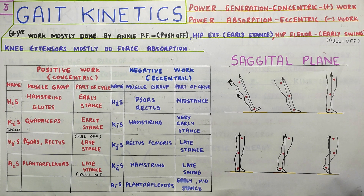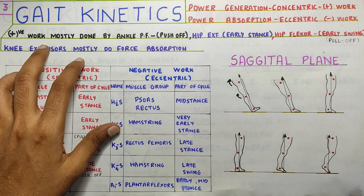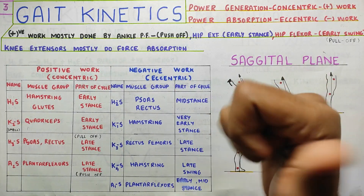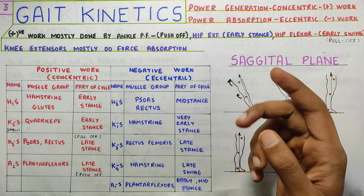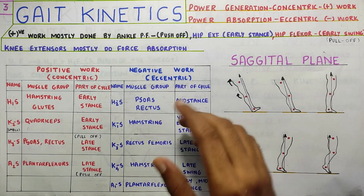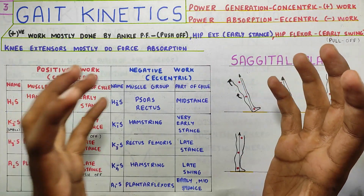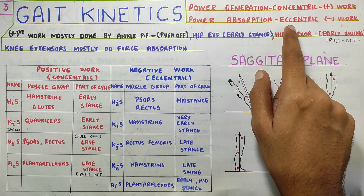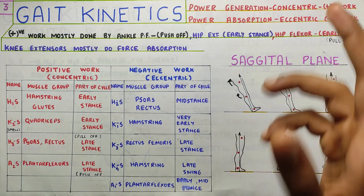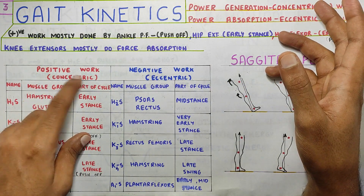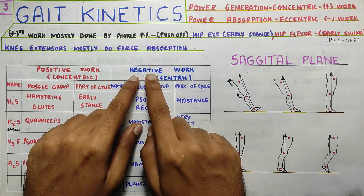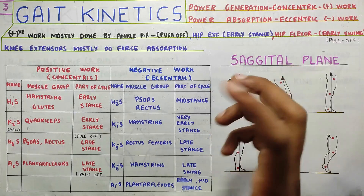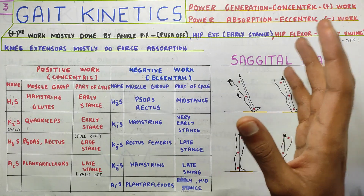In this video we are going to talk about gait kinetics where we will be discussing power. Under power we will discuss power generation and absorption. Power generation is basically the concentric muscle work and power absorption is basically the eccentric muscle work. It is also referred to as positive work (concentric) and negative work (eccentric). We will look at power generation and absorption in the sagittal and the frontal plane.